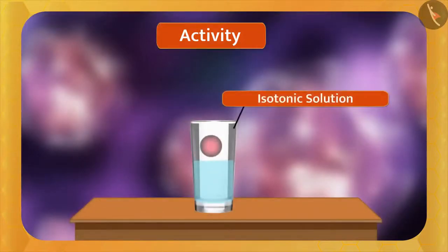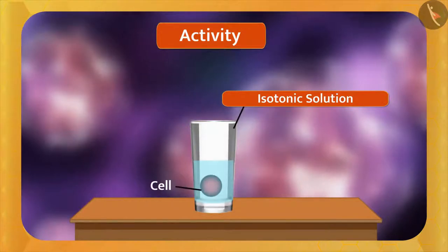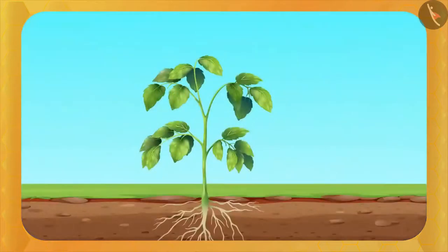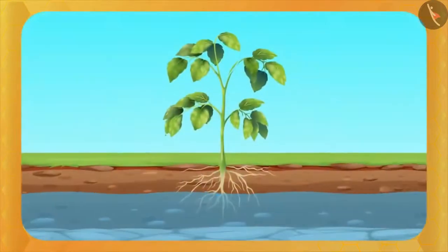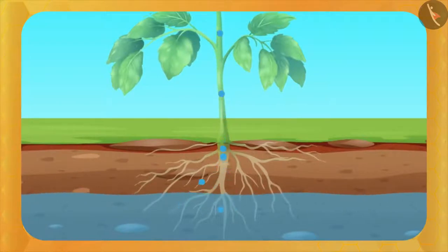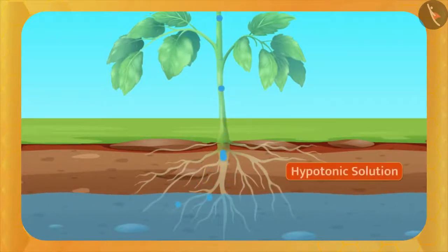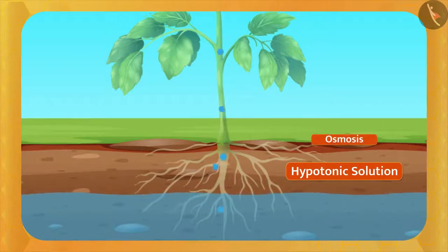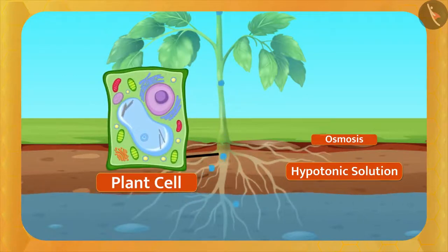If the cell is placed in an isotonic solution, there will be no transport of water at all because both have the same water concentration. Through the osmosis process, plants absorb water from the soil. The amount of water in the root cells is less, so the groundwater acts as a hypotonic solution — osmosis occurs, groundwater enters through the plasma membrane of the root cell, and the cell swells. In this way, osmosis causes the transport of water and salts in plants.